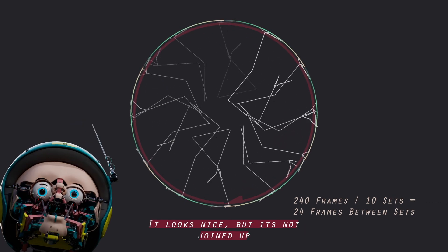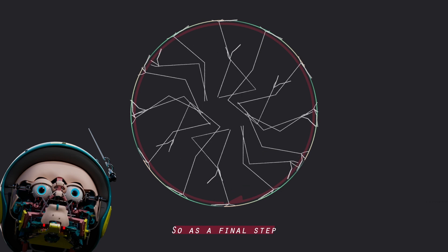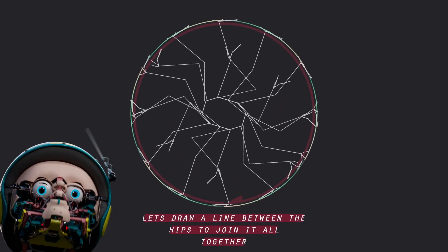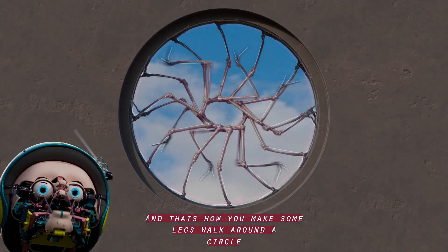It looks nice, but it's not joined up. So as a final step let's draw a line between the hips to join it all together. And that's how you make some legs walk around a circle.